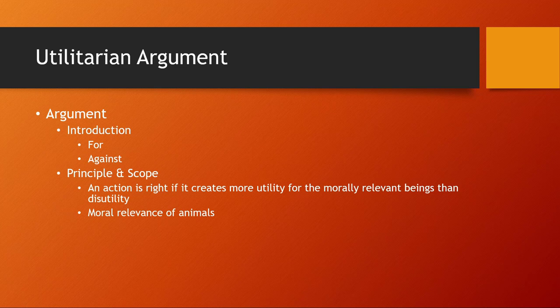Now, if animals are morally relevant on their own — that is to say they count in the utilitarian calculation — then their treatment would obviously be relevant to the moral assessment of actions. It is also possible to argue that animals are morally relevant in varying degrees; it doesn't have to be either-or. So a person could be utilitarian and say yes, animals count, but hold the view that animals count less than humans. That's a fairly common view.